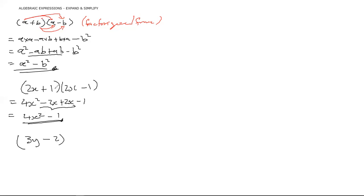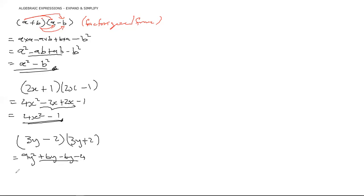Let me try one more time. Maybe it's because I've been starting with a plus — so how about (3y − 2)(3y + 2)? Foiling gives 9y² plus 6y minus 6y minus 4. This time the 6y terms cancel, and we're left with 9y² minus 4. This pattern keeps appearing!